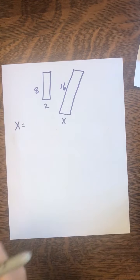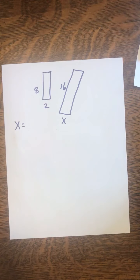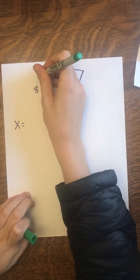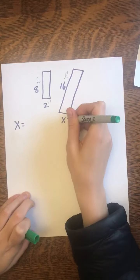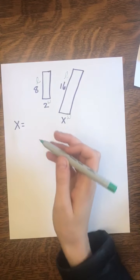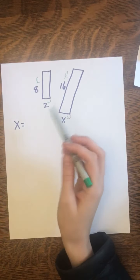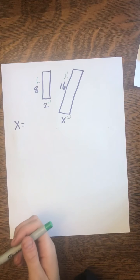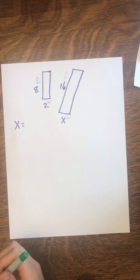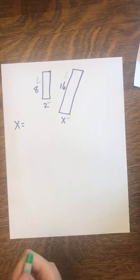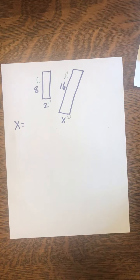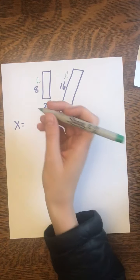We're given that these rectangles are congruent. And it's 8, 2, 16, X. Solve for X. Well, again, I'm going to label my sides because this is helpful. My length is 8, my width is 2. My length is 16, my width is X. I was told that these rectangles are similar, so I know that the sides are proportional.